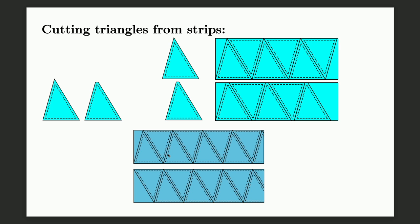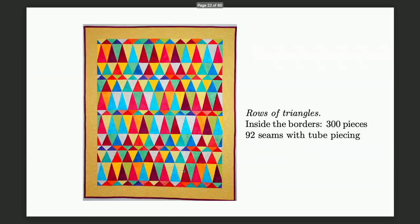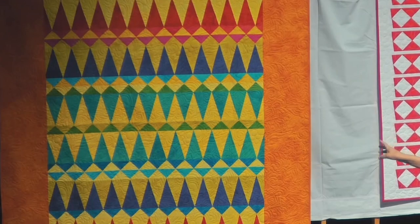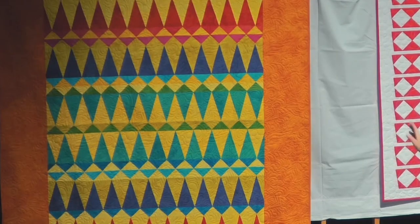I'll tell you how to make rows of triangles in a streamlined way. The types include: equilateral triangles, traditionally called half-square triangles or sawtooth borders, and other less traditional rows. Here are some examples. I always note the number of pieces and the number of seams needed. One quilt on the screen has 300 pieces; a similar one has 400 pieces more.